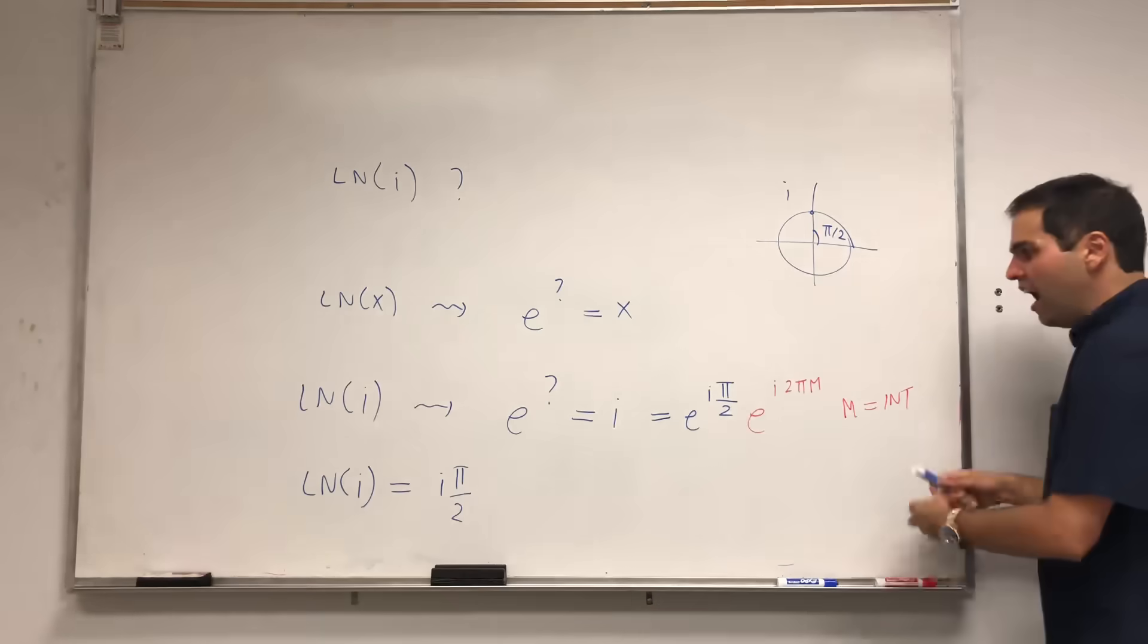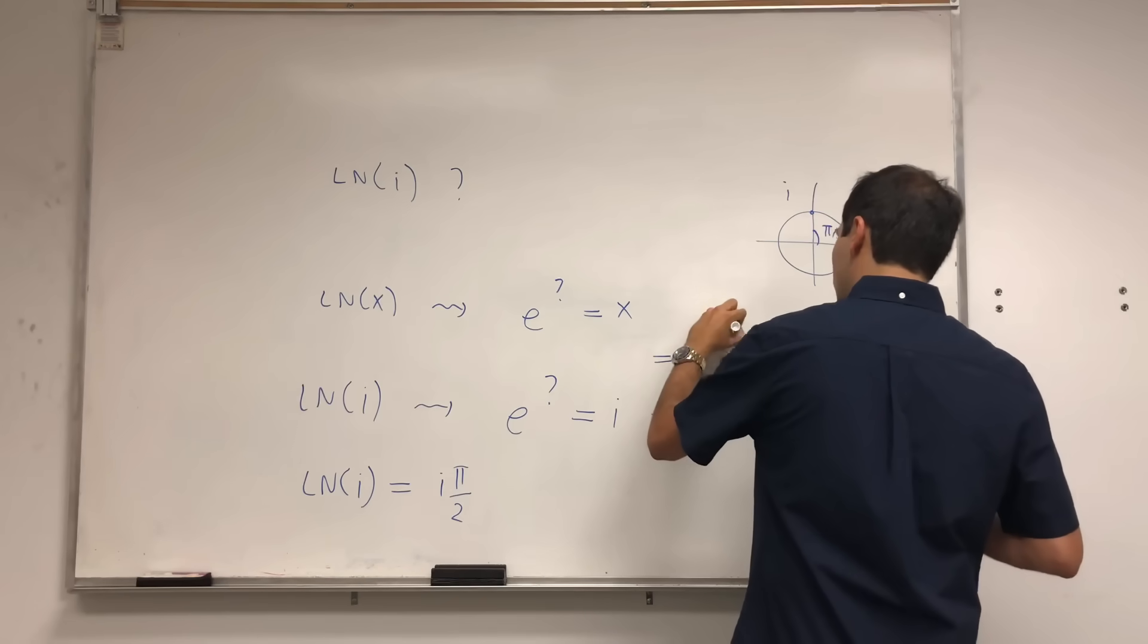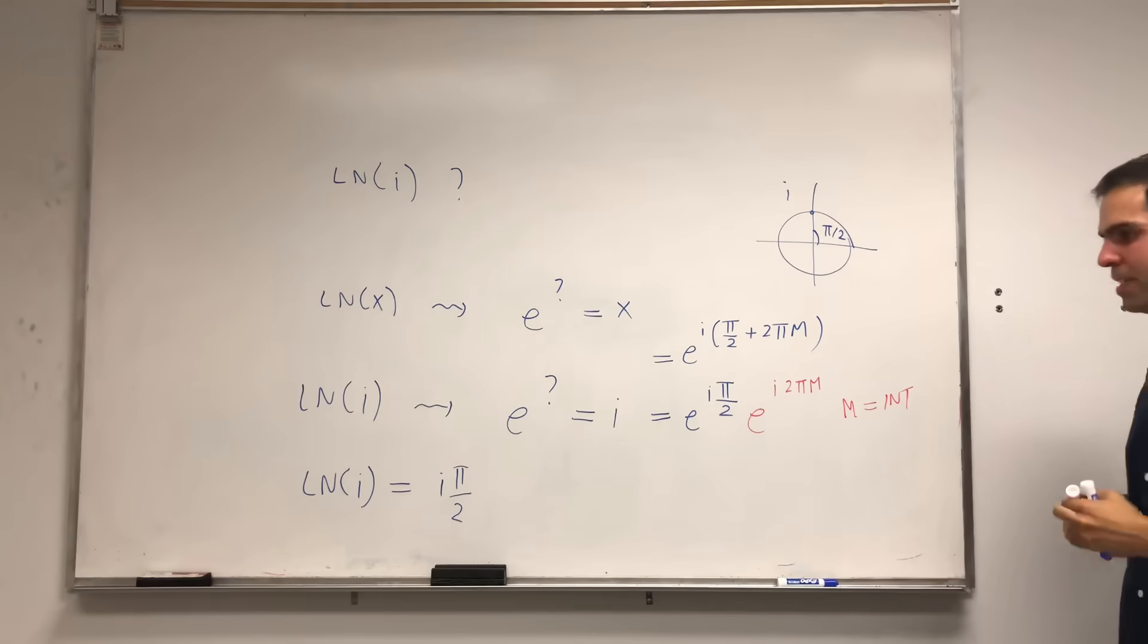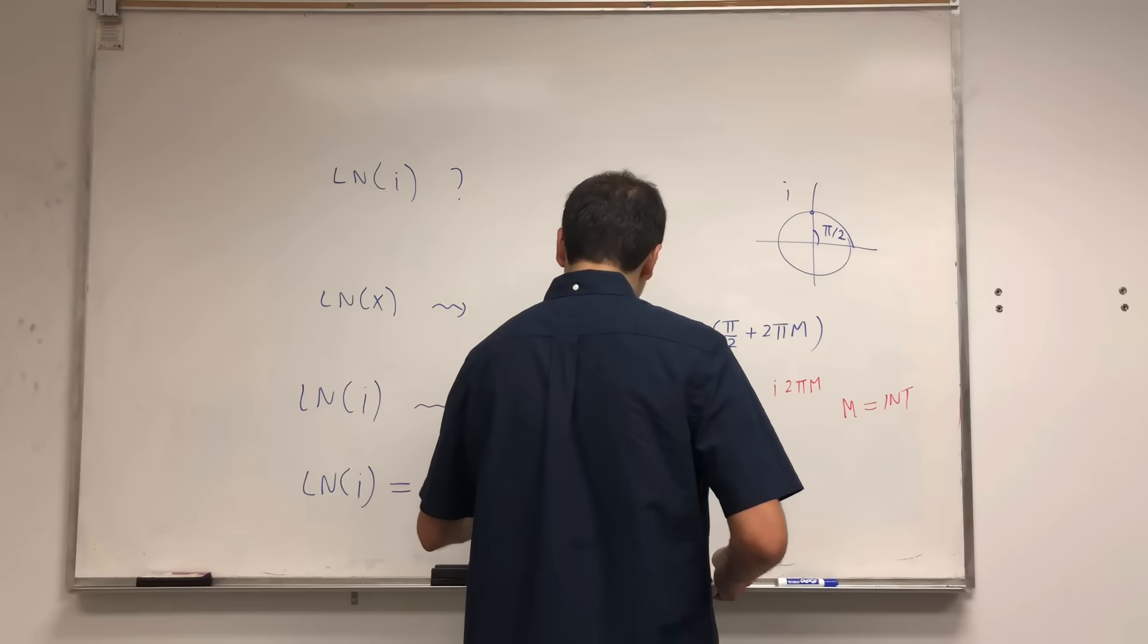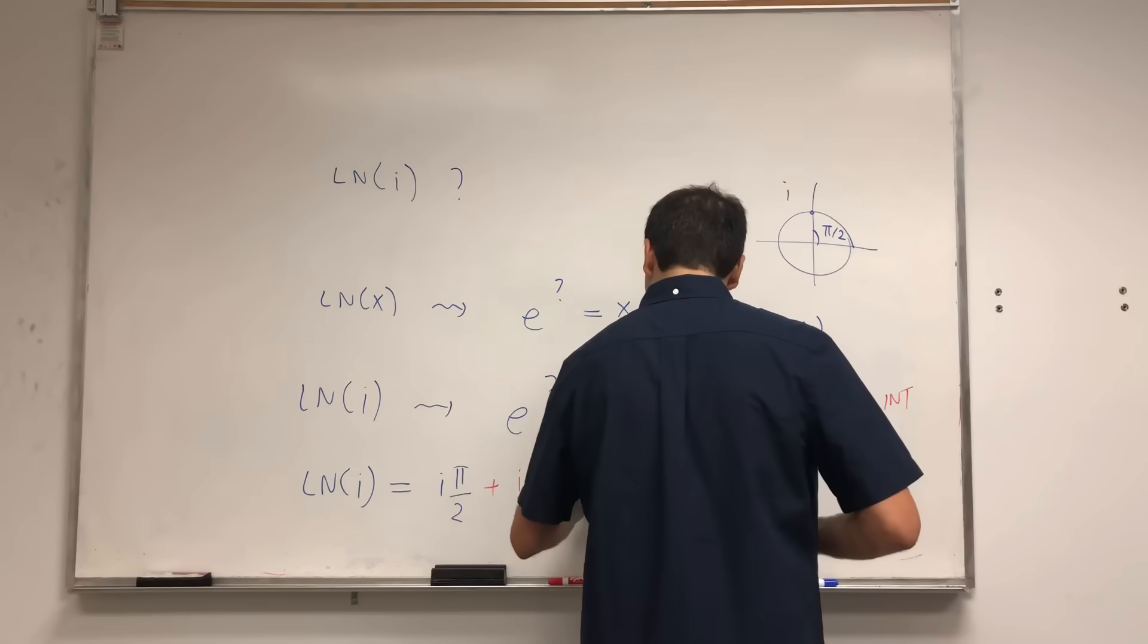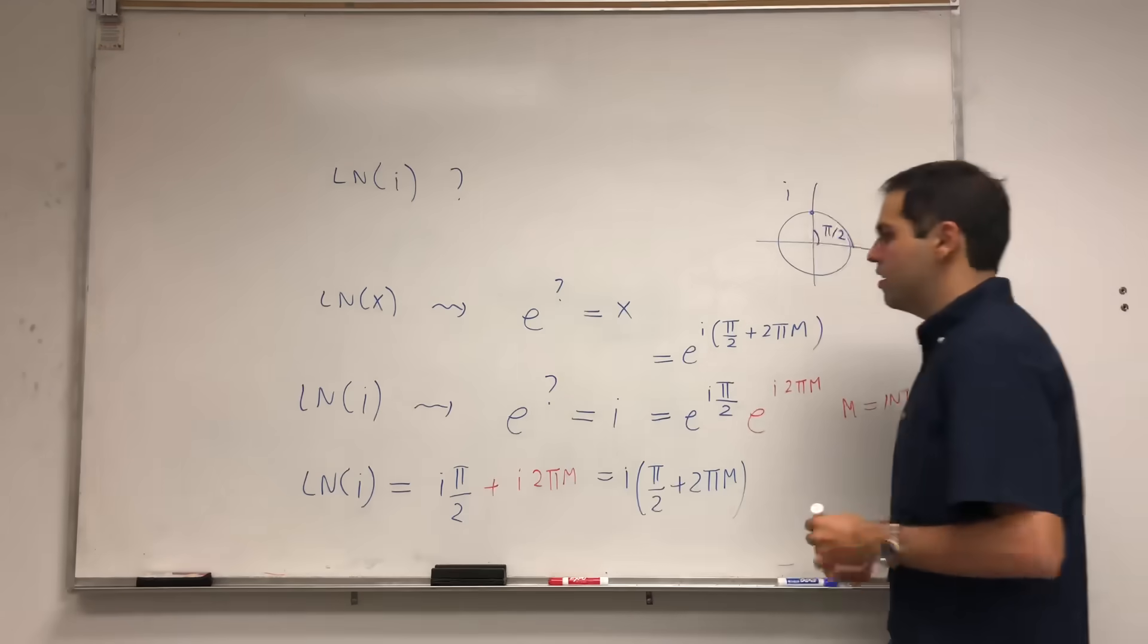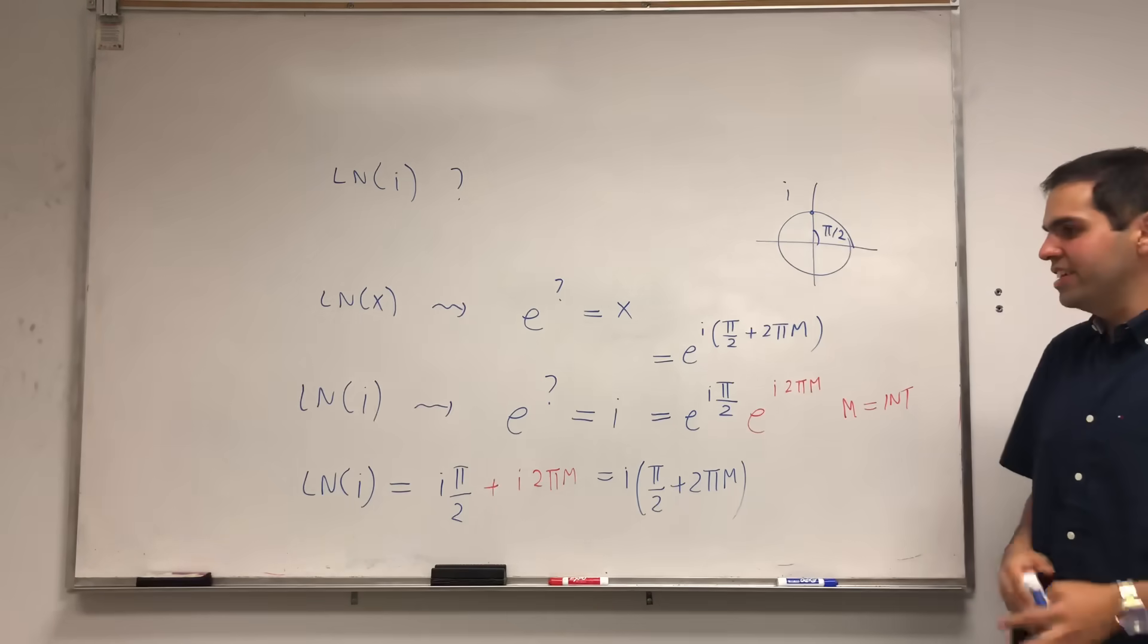Well, in this case, i would be, in fact, e^(iπ/2 + i2πn). And therefore, ln of i should be iπ/2 + i2πn. Or, if you want, i times (π/2 + 2πn). And the question is, in this case, how in the world do we resolve this issue?